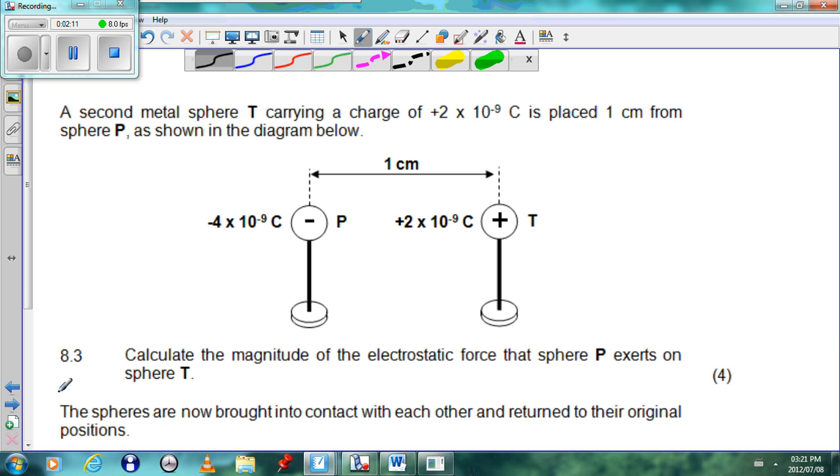If you go on, the sum says a second metal sphere T carrying a charge of 2 times 10 to the minus 9 coulombs is placed one centimeter from sphere P as shown in the diagram. Calculate the magnitude of the electrostatic force that sphere P exerts on sphere T.